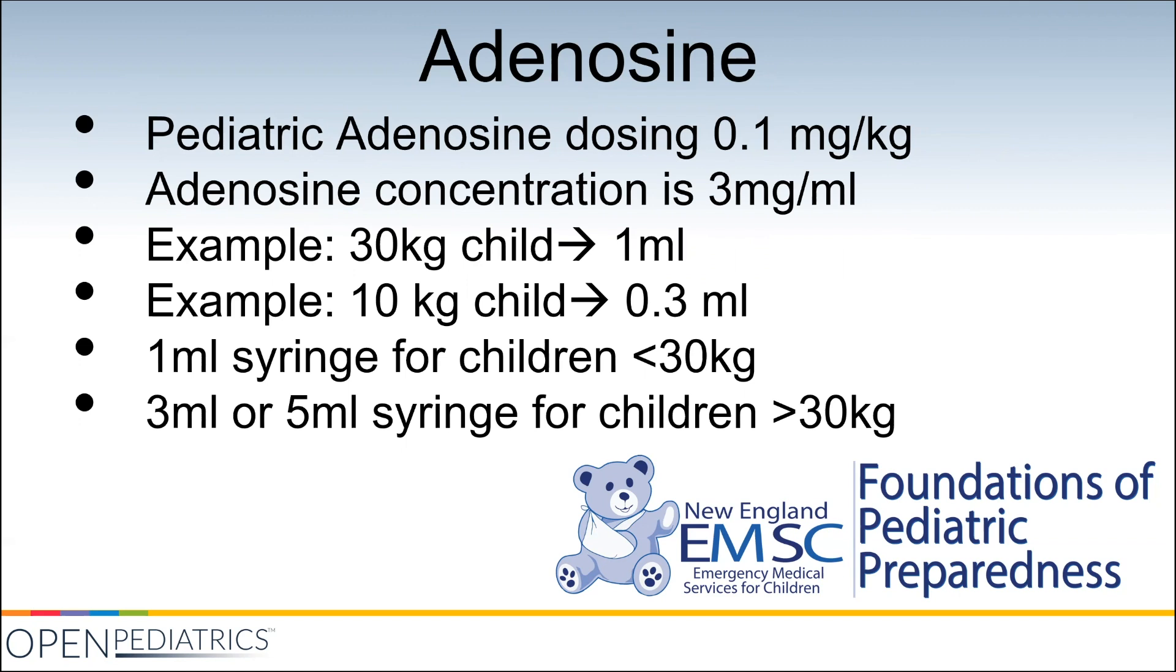Pediatric adenosine dosing for the first dose is 0.1 milligrams per kilogram. The adenosine concentration most commonly available is three milligrams per ml. For example, a 30 kilogram child will get one milliliter dose of adenosine and a 10 kilogram child will get only 0.3 milliliters. In general for children less than 30 kilos we would recommend using a one ml syringe, and a 3 ml or 5 ml syringe for children over 30 kilos.